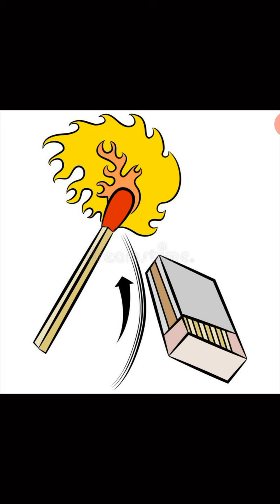When we ignite a matchstick, we strike it against the matchbox, creating friction. When two surfaces rub or strike against each other, they are in contact and friction takes place. The matchstick ignites only because of friction between the tip of the matchstick and the matchbox.